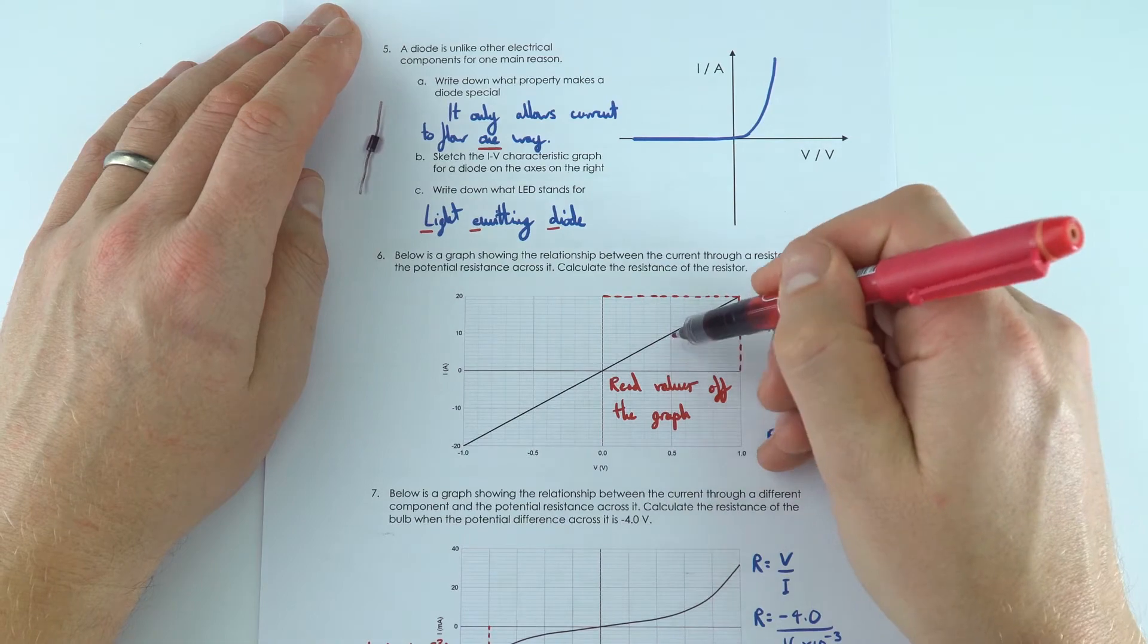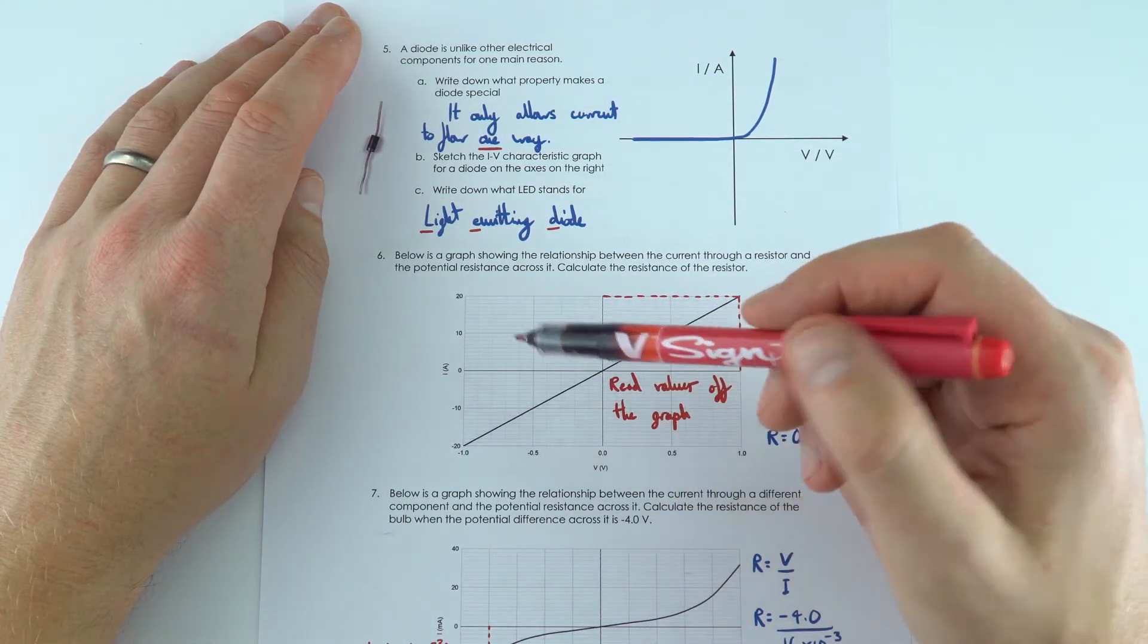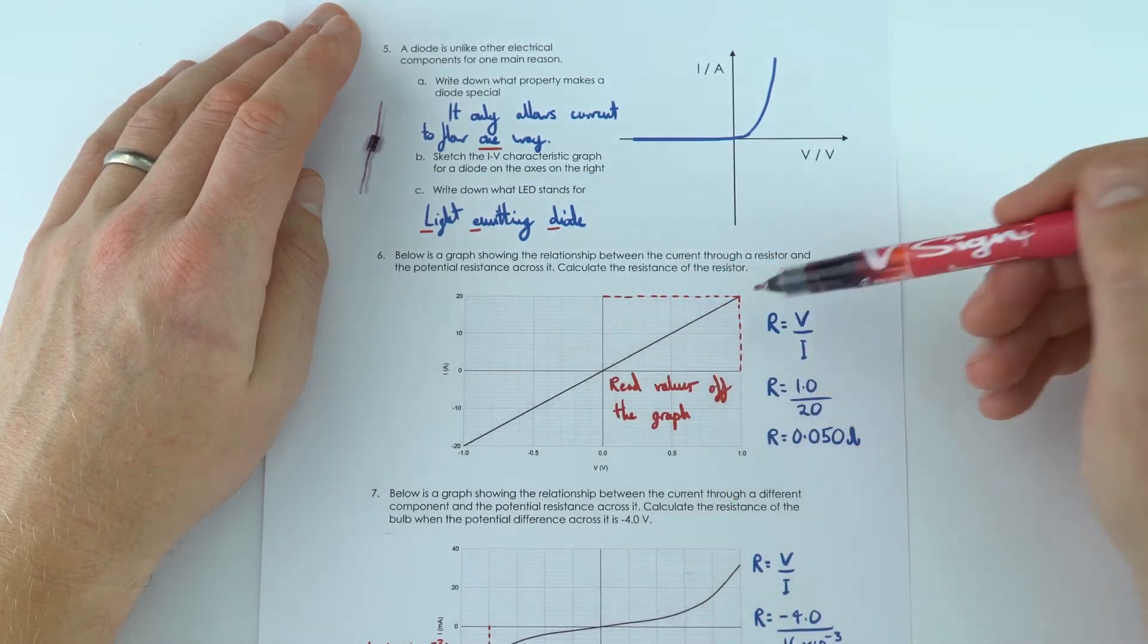So the resistance, we could have worked at any point on the line. We could have done minus, what is it, over here. We could have done minus one divided by minus 20. I just chose this point here.